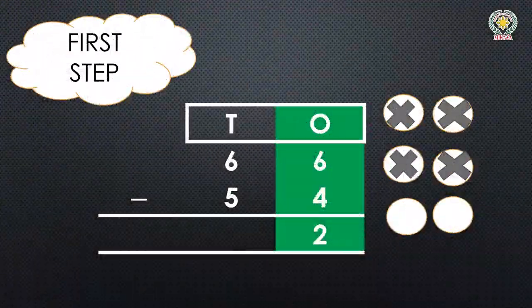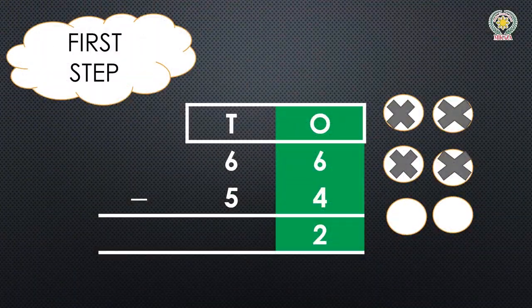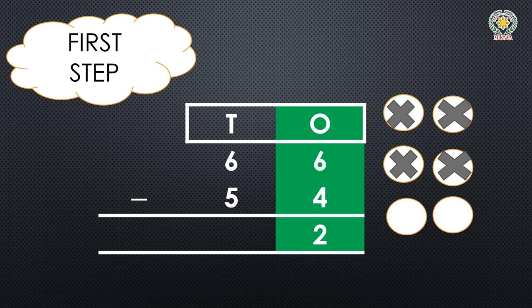How do we find the difference between 66 and 54? The important numbers are 66 and 54. Let's write these numbers in place value form. We have 66 with 6 in tens and 6 in ones, and 54 with 5 in tens and 4 in ones.